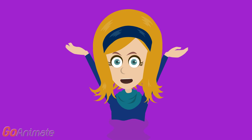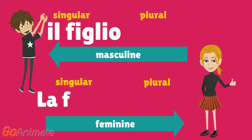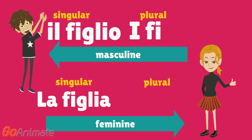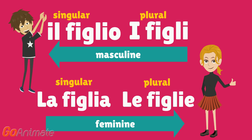And now the younger ones — the son and the daughter. In Italian they are called: il figlio, la figlia. The plural forms are: i figli, le figlie.